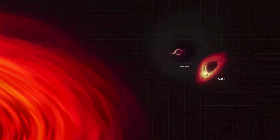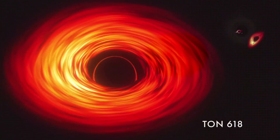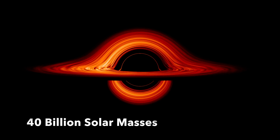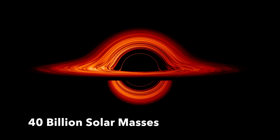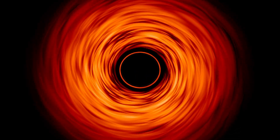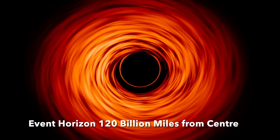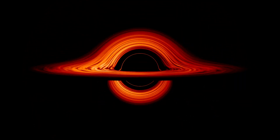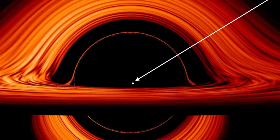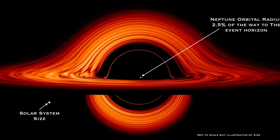Yet even Sagittarius A* appears insignificant in comparison to the colossal behemoth known as TON 618. Situated 18 billion light-years away from Earth, this gargantuan supermassive black hole possesses a mass roughly 40 billion times greater than that of our sun. Placing it at the centre of the solar system would mean its event horizon would be some 120 billion miles away — an utterly incomprehensible distance. To put it into perspective, Neptune, the outermost planet of the solar system, would be a mere 2.5% of the way to the event horizon, whilst being at Earth would mean you have only travelled 0.1% of the way.